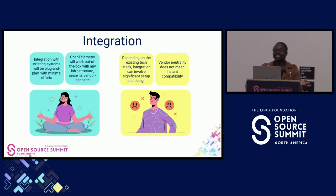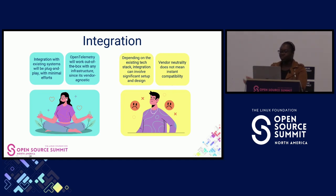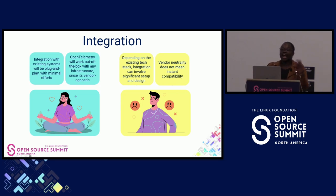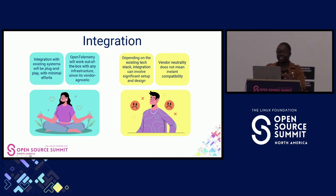Coming back to expectations versus reality on the technical aspect: the first challenge was integration. From installing the SDK to making use of the APIs, I assumed integrating OpenTelemetry with our systems was going to be super easy, since other teams had done it successfully. But what I didn't realize was that our system landscape is very different — some teams have services that interact directly with each other, making context propagation much easier. Our architecture made integration not what I expected.